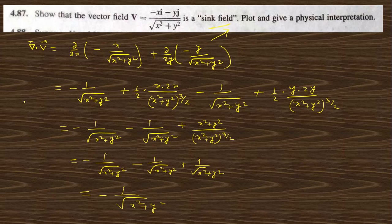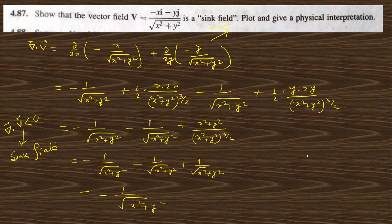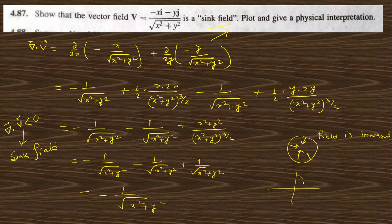Simplifying: the result is −1/√(x²+y²). The minus sign indicates this is a sink field — divergence of v is less than 0. This means v is a sink field. The physical interpretation is that the field lines always point inward in this field.